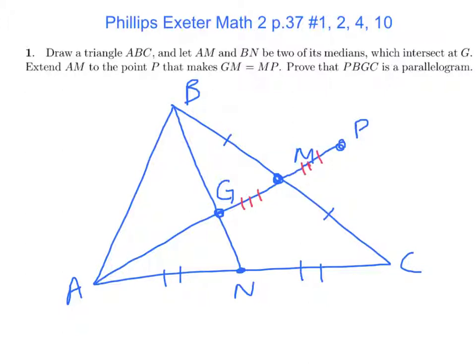Okay, prove that PBGC is a parallelogram. Wow. So now we have that, look at a different color here. So P, B, G, C. Well, it looks pretty good.